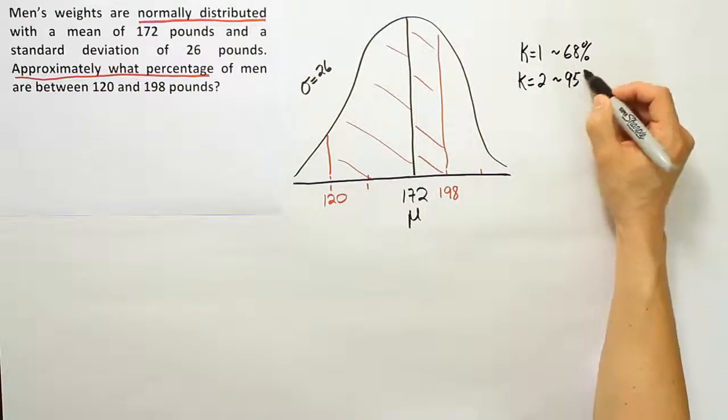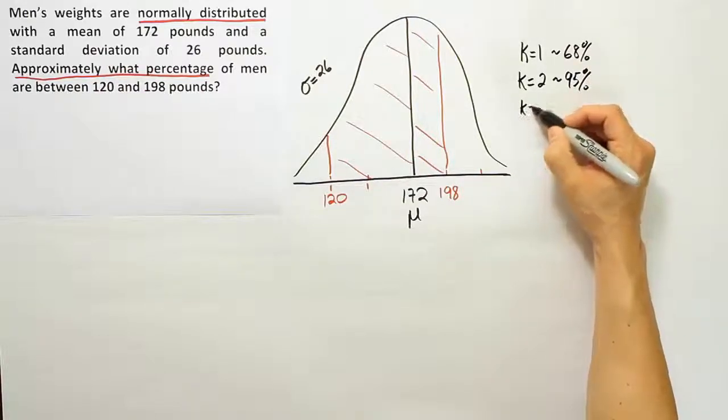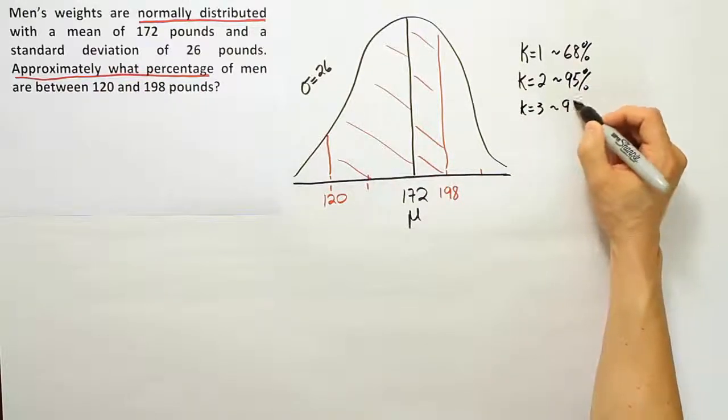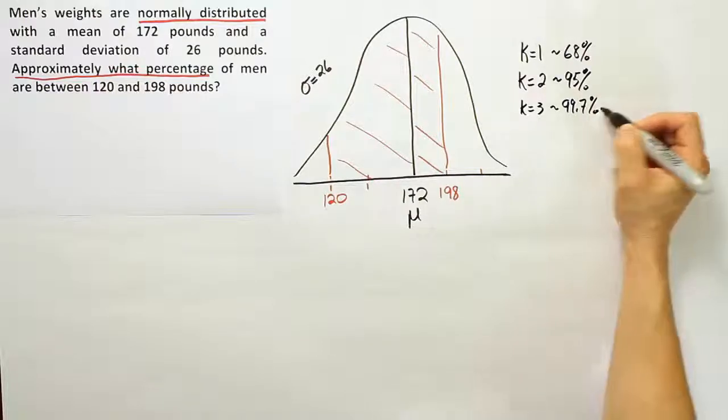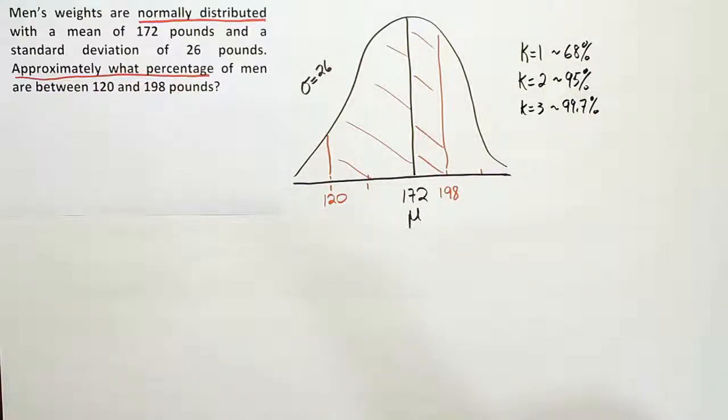When k is 3, we capture approximately 99.7 percent. You have to keep that rule in mind because that's the rule we need to use to solve this. Our goal then is to figure out how far apart are these numbers in terms of standard deviations.